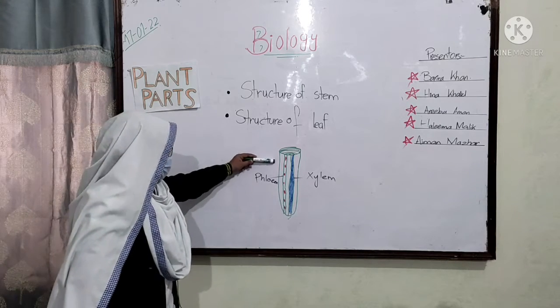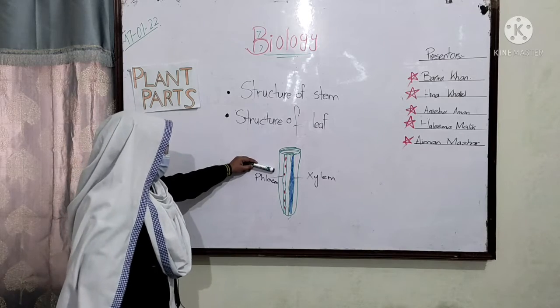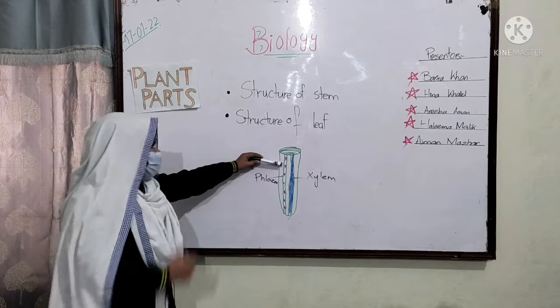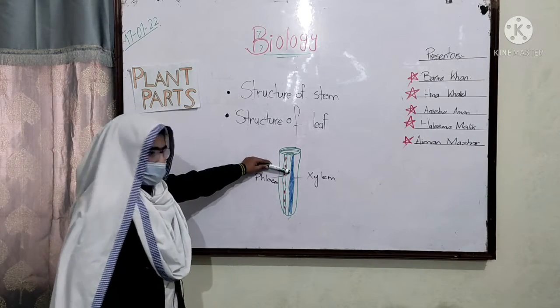Phloem tissue in the stem transports food and minerals to the leaves. And xylem tissue transports water to the leaves.